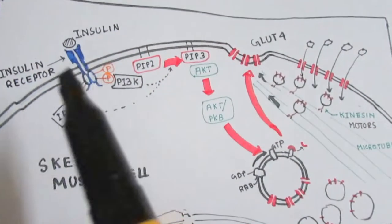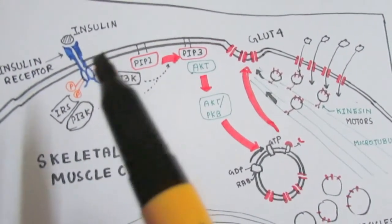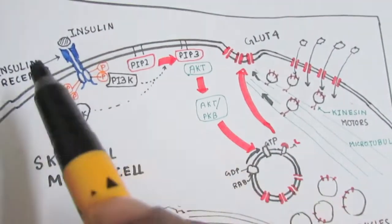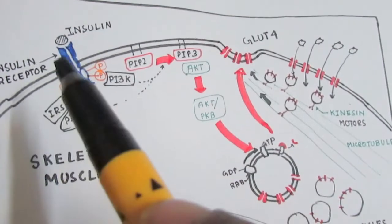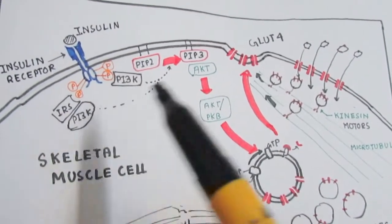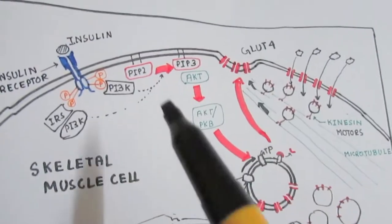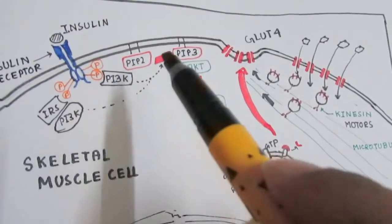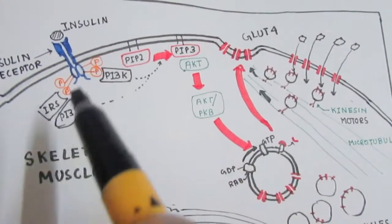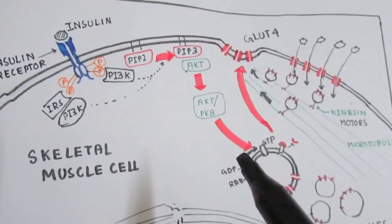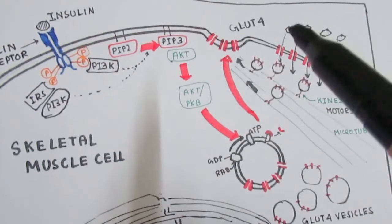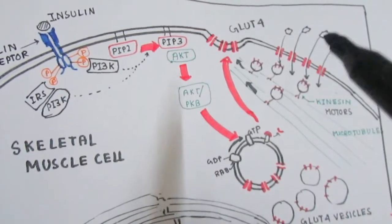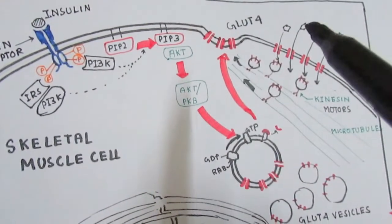In type 2 diabetes, insulin is OK—insulin is formed—but the receptor and insulin interaction is not sensitive. Insulin can bind to the receptor but doesn't trigger the cascade of reactions. In type 2 diabetes, any of these steps in the signal transduction cascade could be faulty. As a result, GLUT4 vesicles would not fuse to the membrane and will not allow glucose to enter the cell.